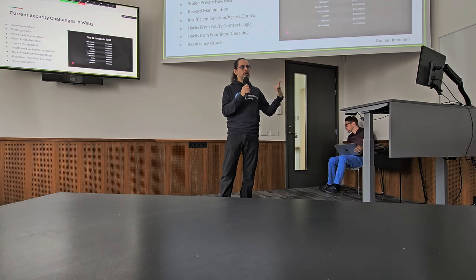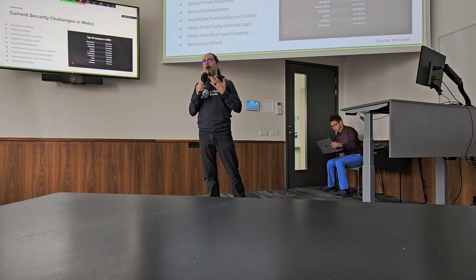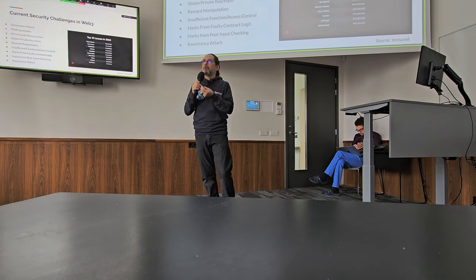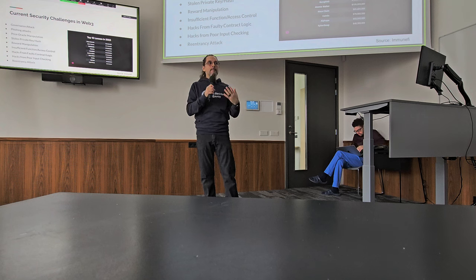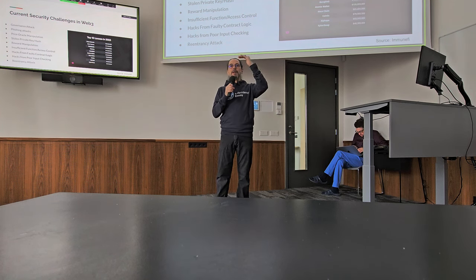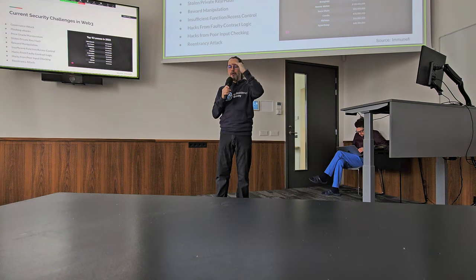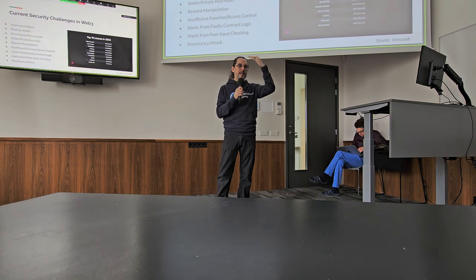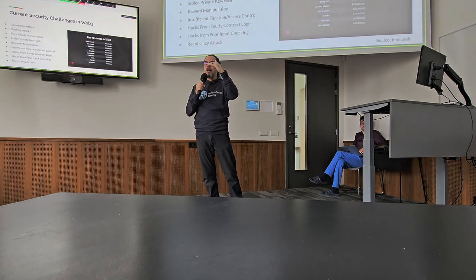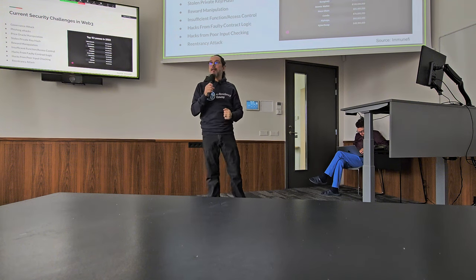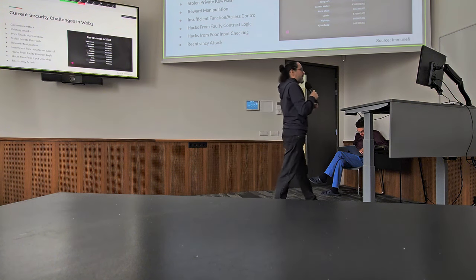Sometimes the contract is pretty complex and it's hard to predict what will happen next. Re-entrance attacks are happening — it's bad because something is being executed out of order. Sometimes tokens are being withdrawn without the verification being executed first. AI can help with that as well.